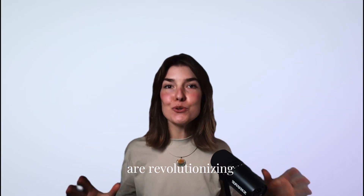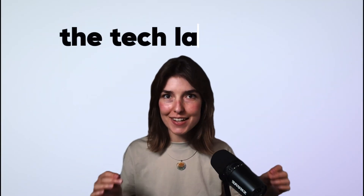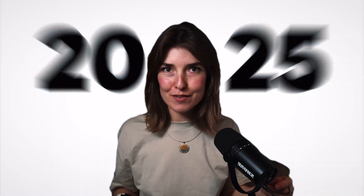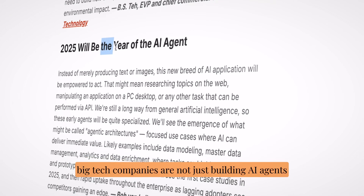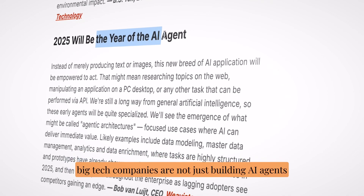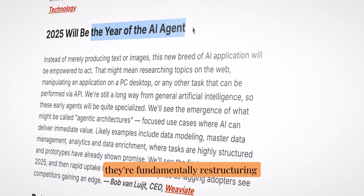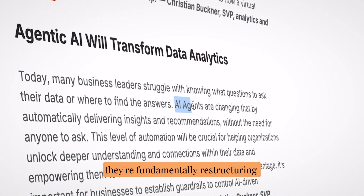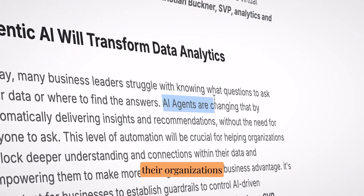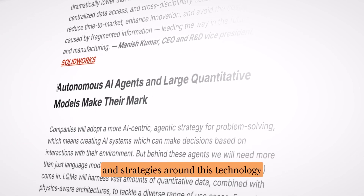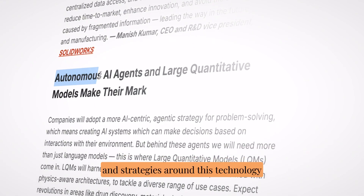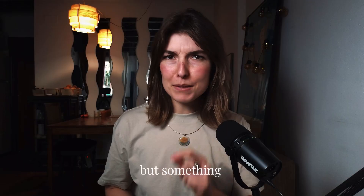AI agents are revolutionizing the tech landscape in 2025. Big tech companies are not just building AI agents — they're fundamentally restructuring their organizations and strategies around this technology.